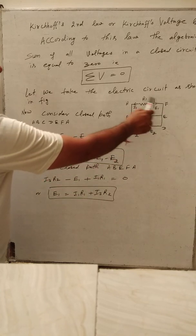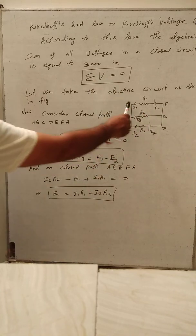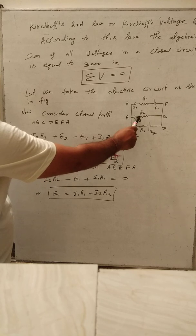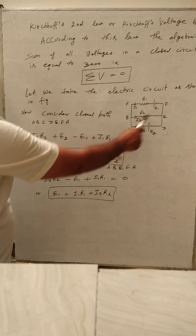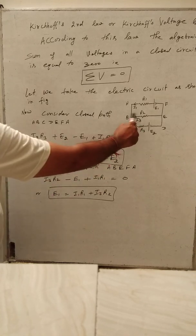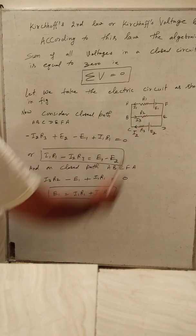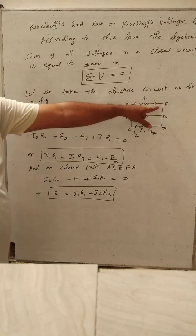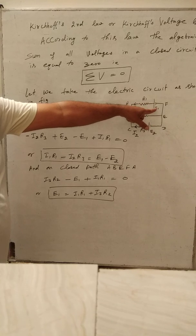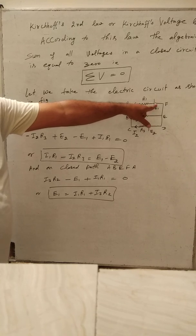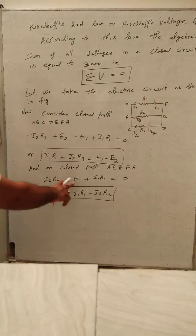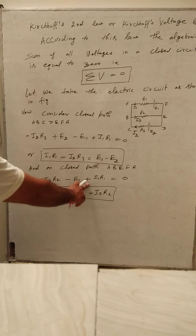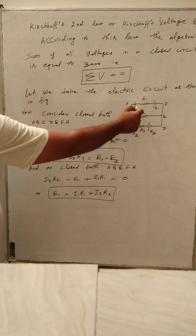A, B, E, F, A. This closing path has current I3, so the product current and resistance is I3R2, which is along the direction of closing path, so I3R2 is taken as positive. Now, again on traversing the closed path, we come first along the negative electrode of E2, so E2 is taken as negative, plus the product of current I1 and R1 is taken as positive because current is along the direction of the closed path, equal to zero.